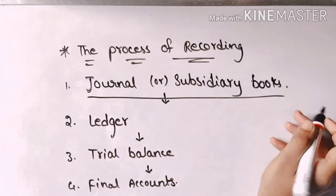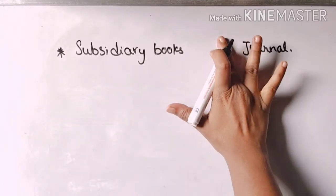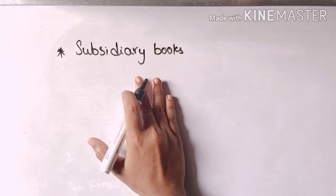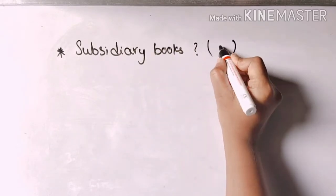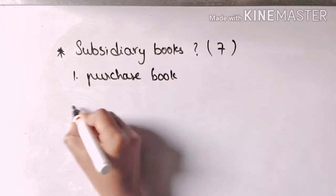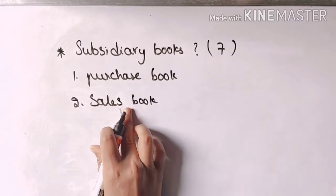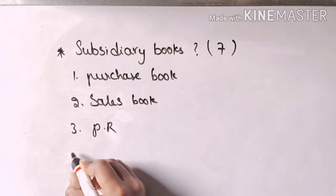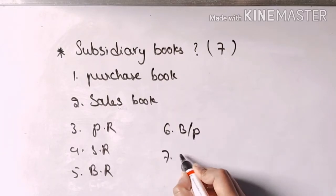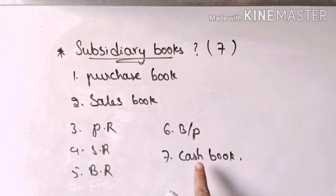Now I want to explain a few topics about the journal and subsidiary books. Setting aside the journal, we will mainly focus on the subsidiary books. There are seven types of subsidiary books: Purchase Book, Sales Book — in these books only entries are recorded, not posting — Purchase Return Book, Sales Return Book, Bills Receivable Book, Bills Payable Book, and lastly the Cash Book. The Cash Book is a subsidiary book as well as a principal book — both recording and posting can be done in the Cash Book itself.